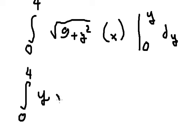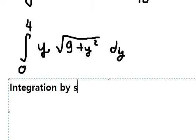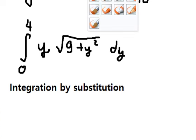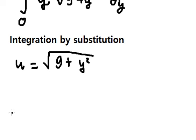Y multiplied by the square root of 9 plus Y squared dY. Next we need to use integration by substitution. So I will put u equals the square root of 9 plus Y squared.